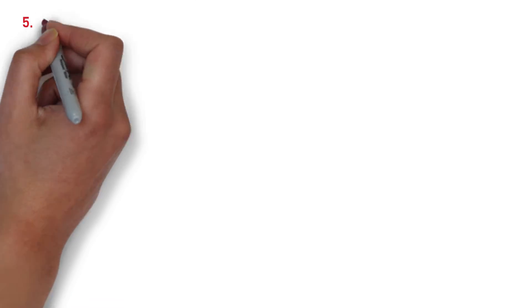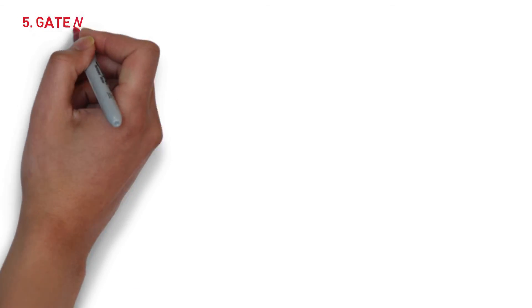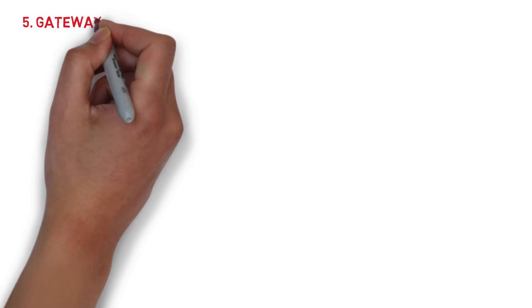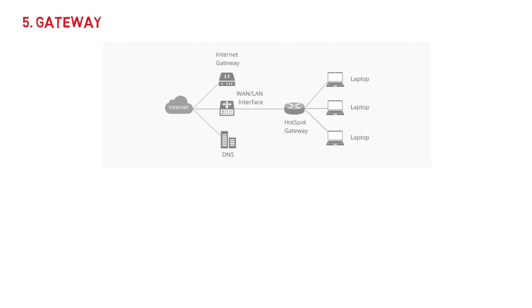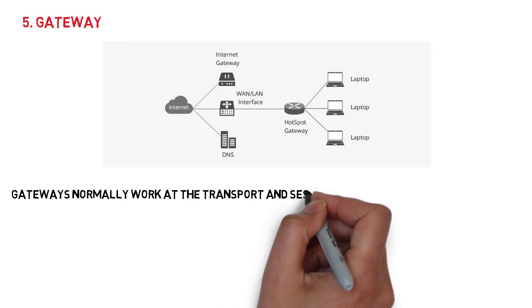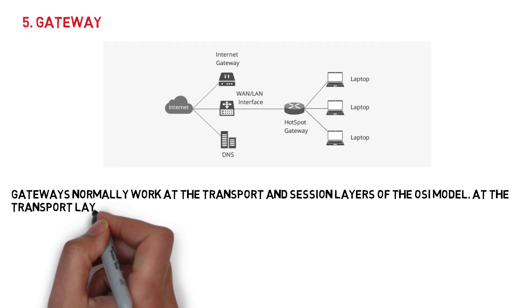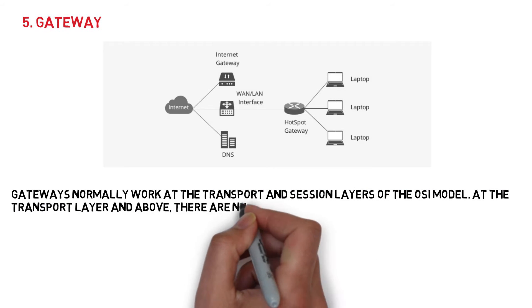5. Gateway. Gateways normally work at the transport and session layers of the OSI model. At the transport layer and above, there are numerous protocols and standards from different vendors; gateways are used to deal with them.